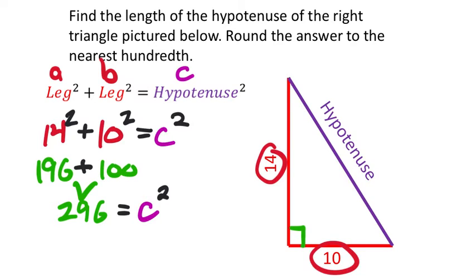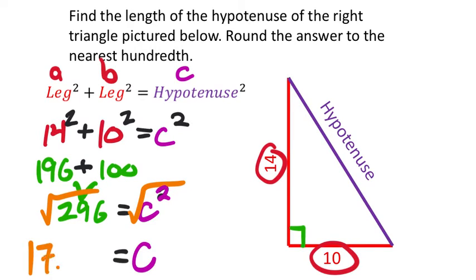We just need to square root both sides. The square root and the exponent 2 undo each other, leaving just the C value. In the calculator, the square root of 296 gives 2√74, but we want the decimal to the nearest hundredth. Pushing the double arrow button gives 17.2046, so rounded to the nearest hundredth, the hypotenuse is approximately 17.20.